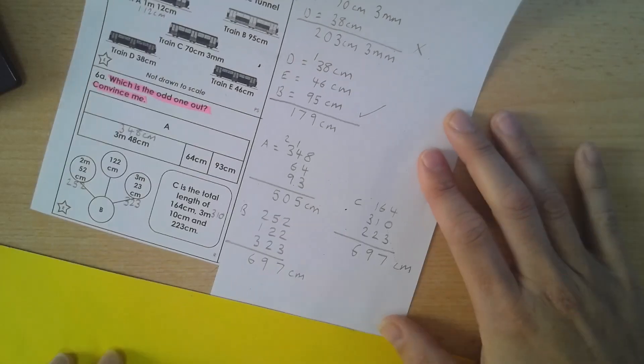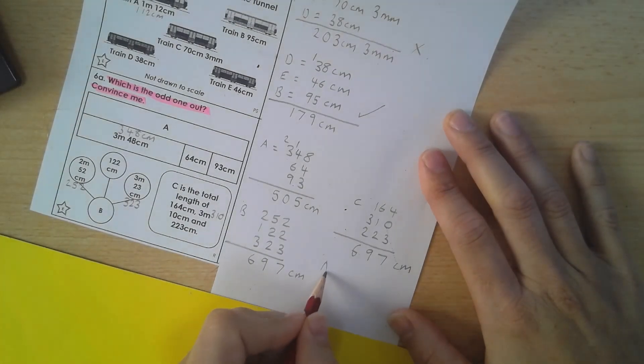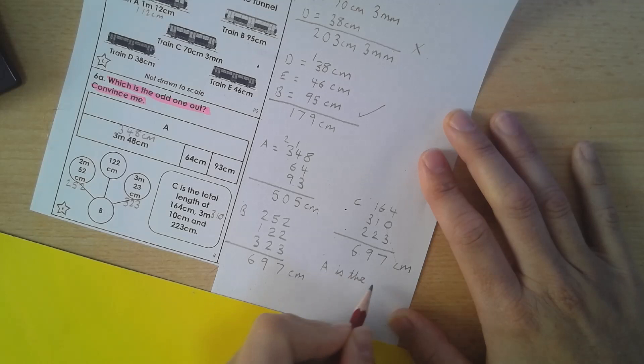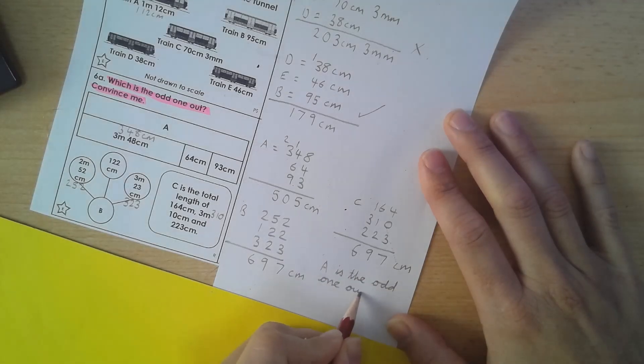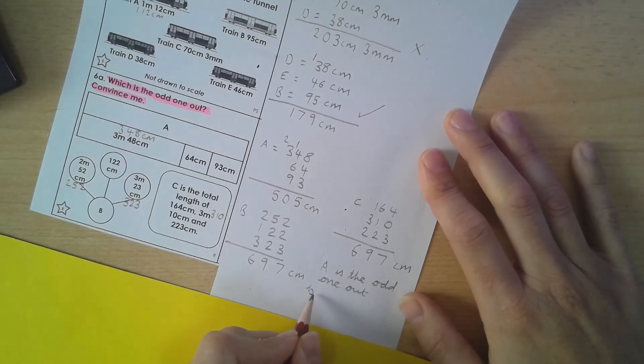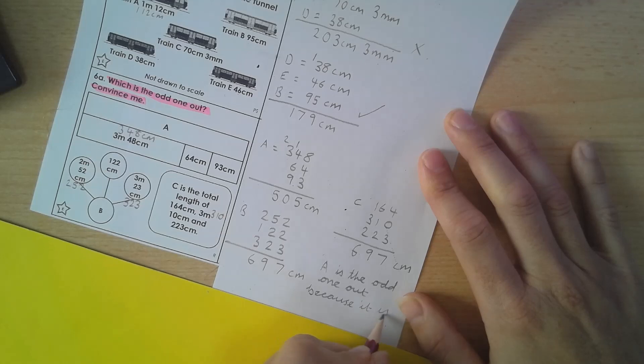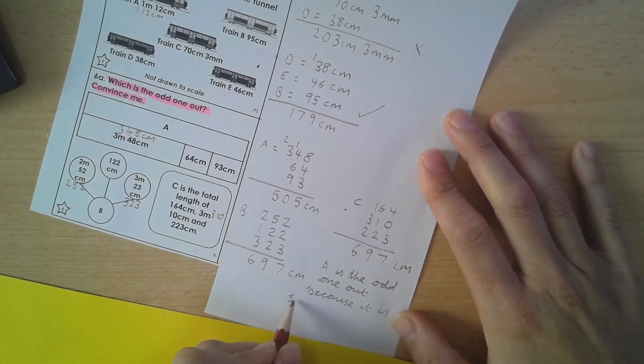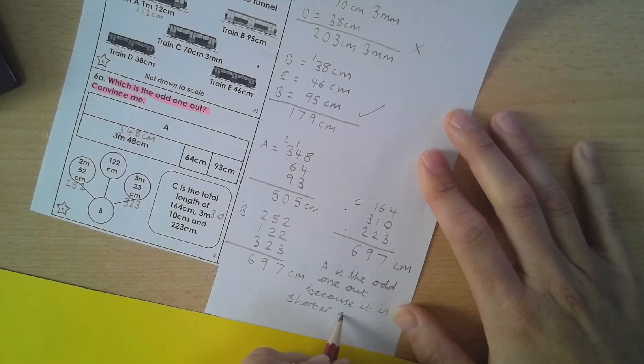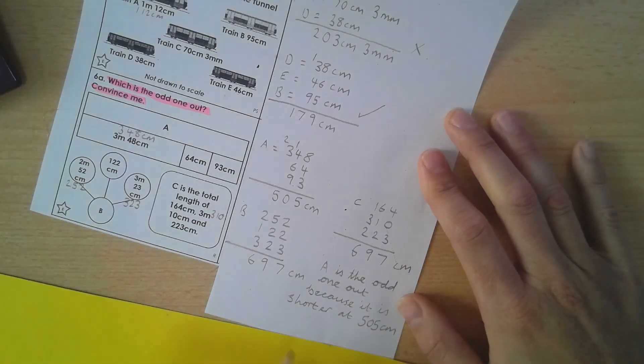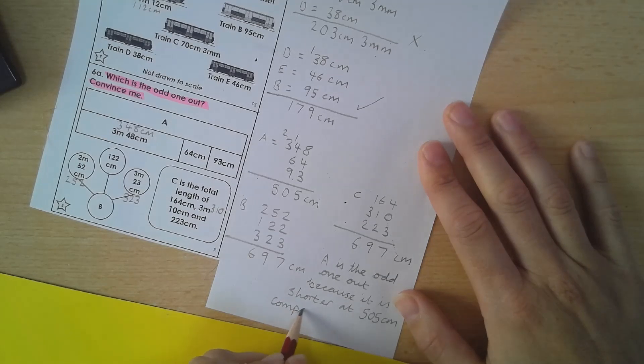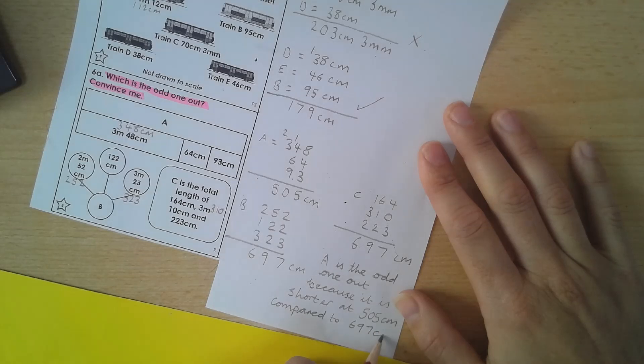That means C and B are the same, so we would say A is the odd one out, because it is shorter at 505 centimetres, compared to 697 centimetres.